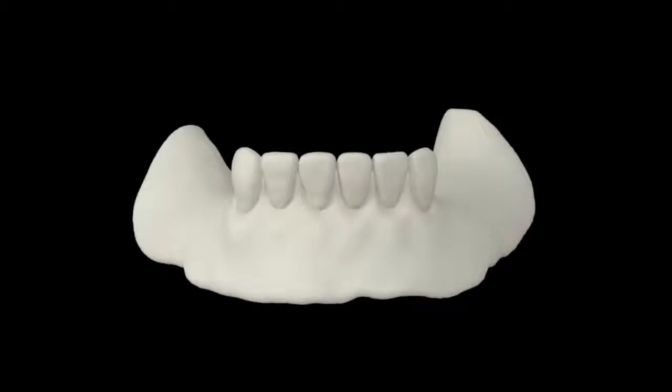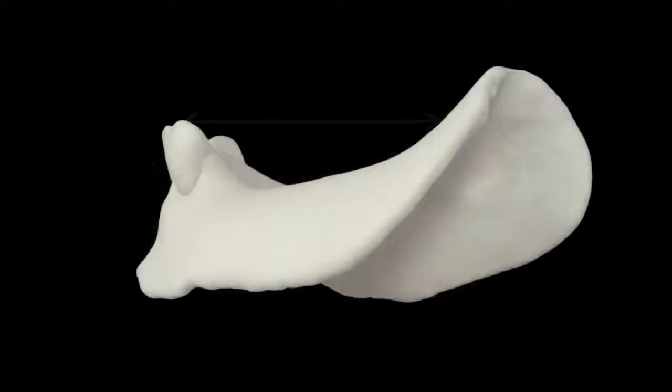For the mandibular guide, the anterior six teeth are positioned with the incisal edge 18 mm from the vestibule. A line that extends from the incisal edge to halfway up the retromolar pads is used to establish the occlusal plane.